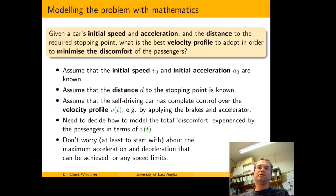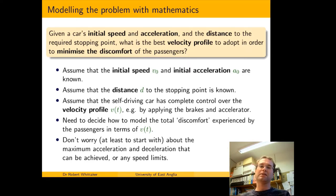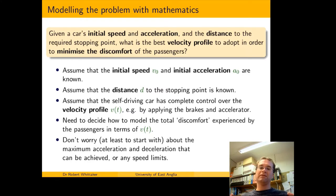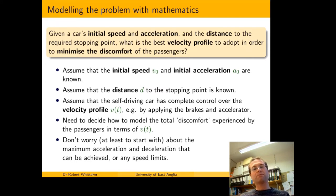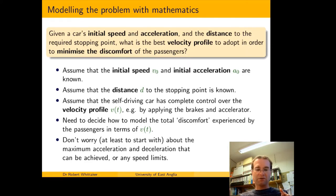We now need to translate this into something more mathematical — write it in terms of equations, maybe introduce an optimization problem with an integral. We're told we know the initial speed, initial acceleration, and the distance, so let's give those mathematical symbols: initial speed v₀, initial acceleration a₀, and stopping distance d. We'll assume the self-driving system has complete control over the velocity profile. We'll define a function v(t) — the velocity as a function of time — specifying what the velocity should be at each point in time.